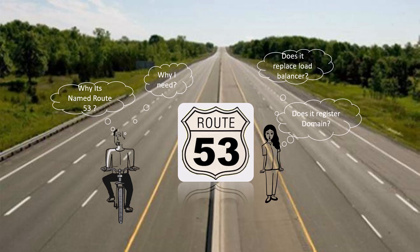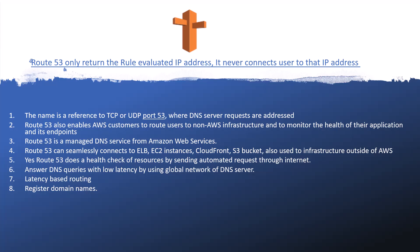Route 53 only returns the rule-evaluated IP address — it never connects the user to that IP address. Basically, when a user is trying to access your domain, for example XYZ.com, Route 53 only provides the relevant IP address based on a rule-based algorithm. Then, with the help of this IP address, the user connects to XYZ.com. It's not like Route 53 is directly connecting to that web server.